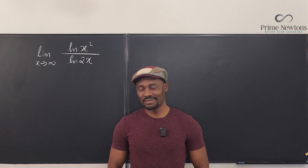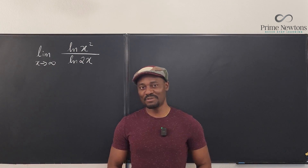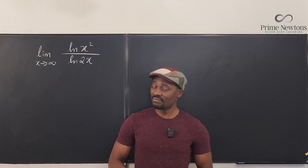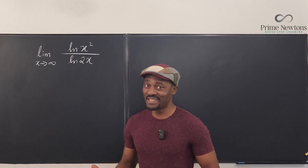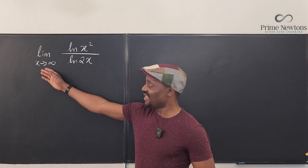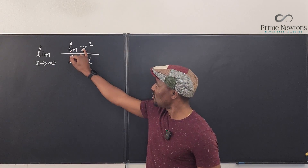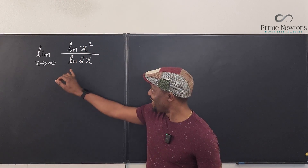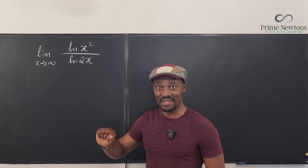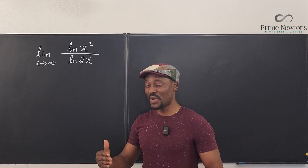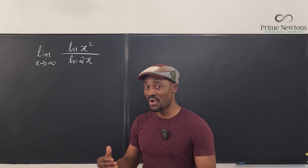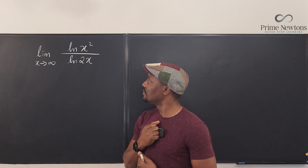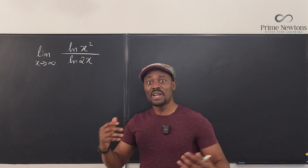Welcome to another video. Let's do some calculus — let's take the limit of this expression as x goes to infinity. As x goes to infinity, the natural log of x squared goes to infinity, and the natural log of 2x also goes to infinity. So we have the indeterminate form of infinity over infinity.